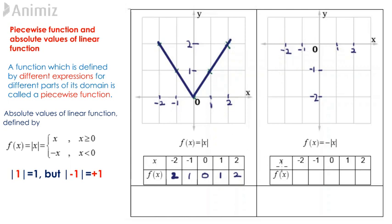How about negative absolute value function? The corresponding y values are as follows: negative 2, negative 1, 0, negative 1, and negative 2. We are going to plot all these points.